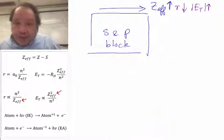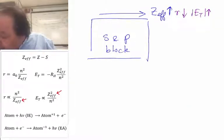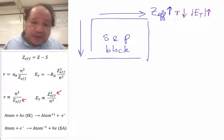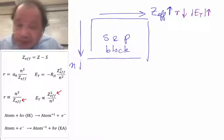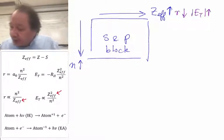When we go down in the periodic table, go down a column, the dominant factor is not Z_eff. It's the fact that N has changed. N is getting larger as we go down in the periodic table.